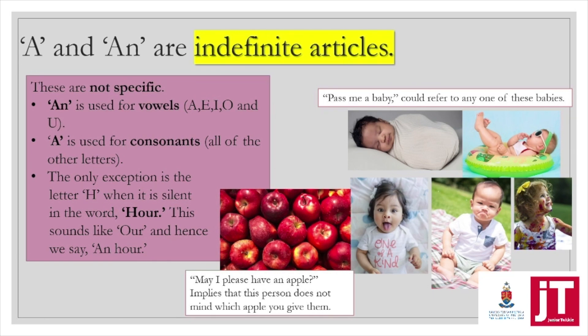A is used for consonants, which basically means 'a' is used for all of the other letters in the alphabet. The only exception is the letter H when it is silent, as in the word 'hour.' The H is silent — it sounds like 'our,' which is a vowel sound. Hence we say 'I'll be there in an hour.' For fluent English speakers, 'a hour' sounds wrong because it sounds like you're matching 'a' with a vowel sound.